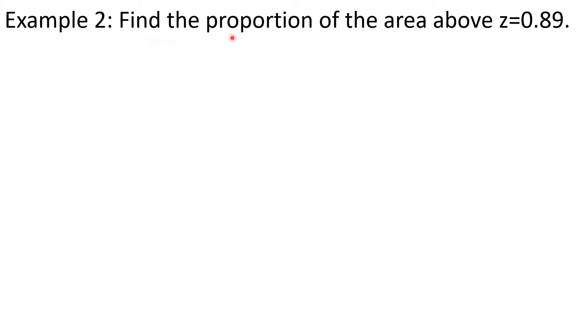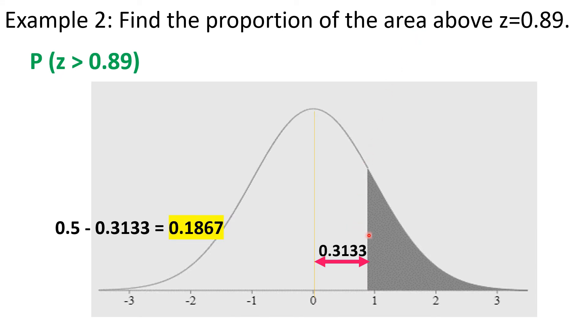Example 2. Find the proportion of the area above z equals 0.89. Again, in terms of notation, that is P or probability that z is greater than 0.89. In the previous lesson also, we've solved for this area already. The area of that shaded region above 0.89 is 0.1867.